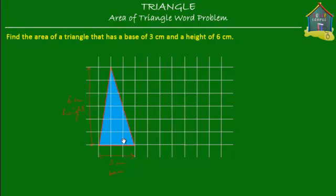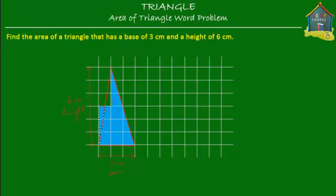Now let's find out what the area of this triangle is. How about we cut up some of the parts of this triangle and put them into the square grid over here and see how many squares we are able to fill. So let me cut from here — this part over here — and turn it and fit it here. It fits quite nicely. Now let's cut this part and turn it and try to fit it over here. It fits nice.